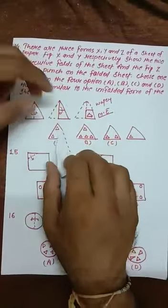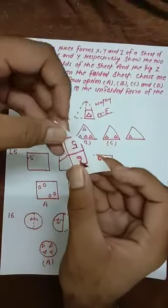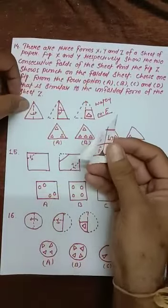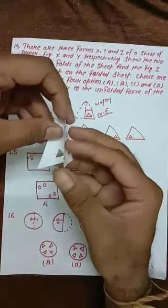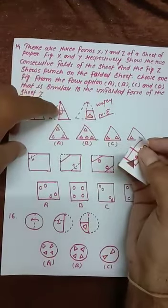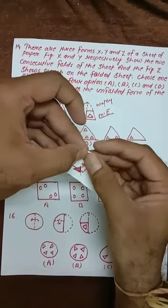First fold the triangle from the middle - this was the first part. Now from the top also in the second part, I have folded from the top. After folding, there's a triangle in the middle part of the triangle.